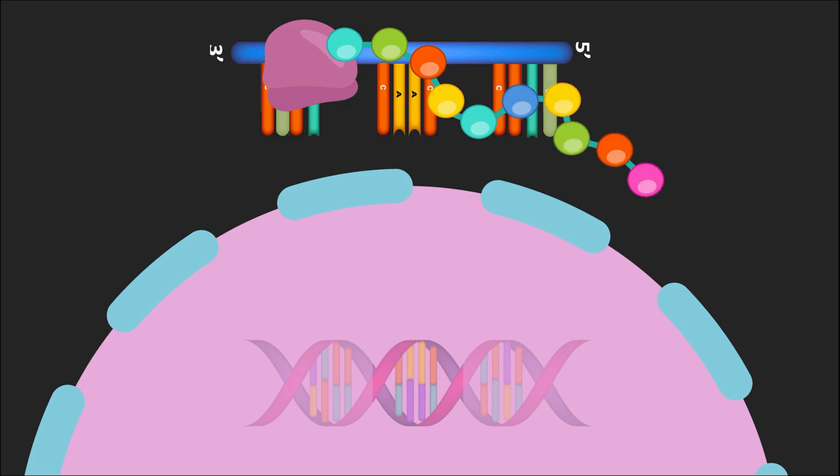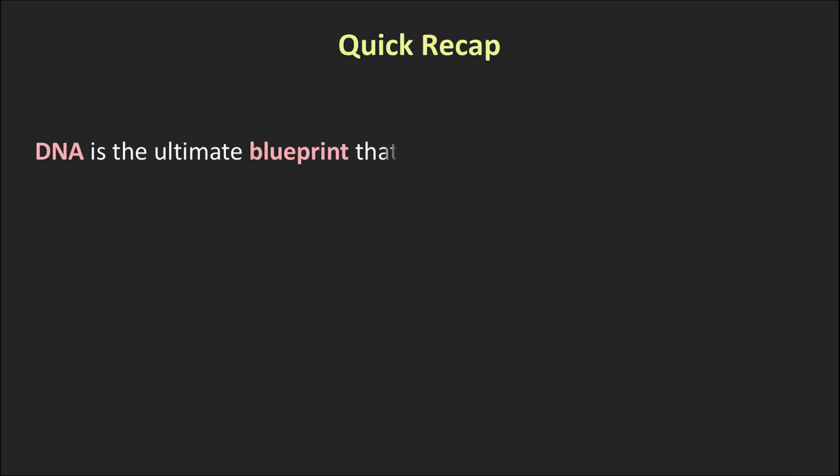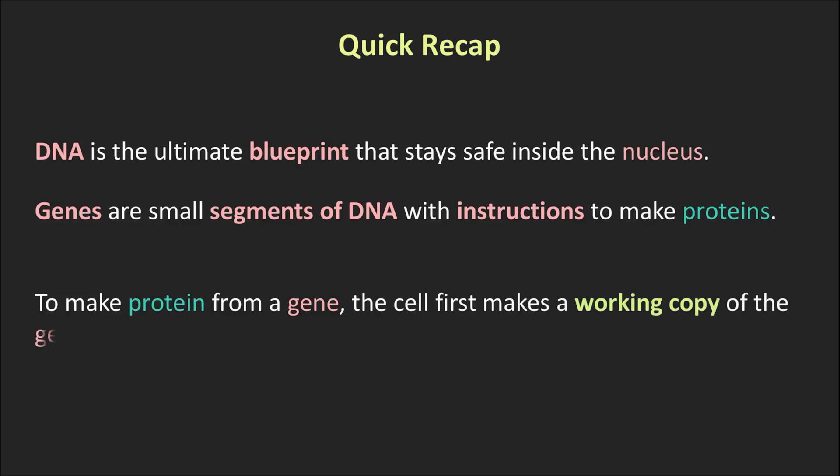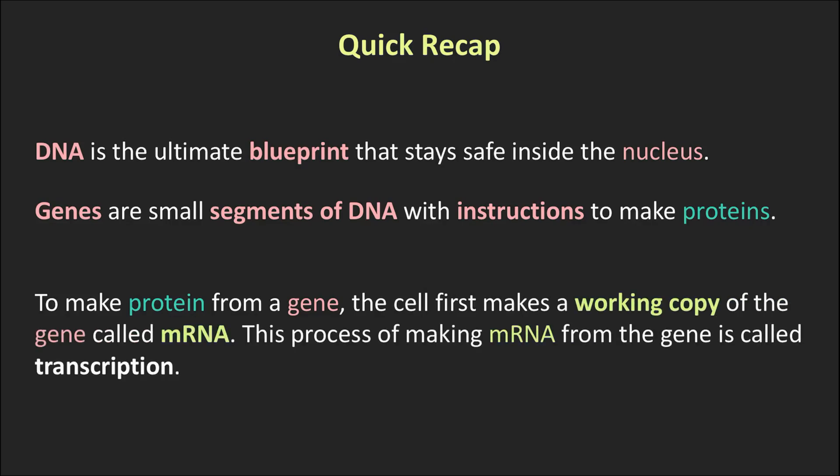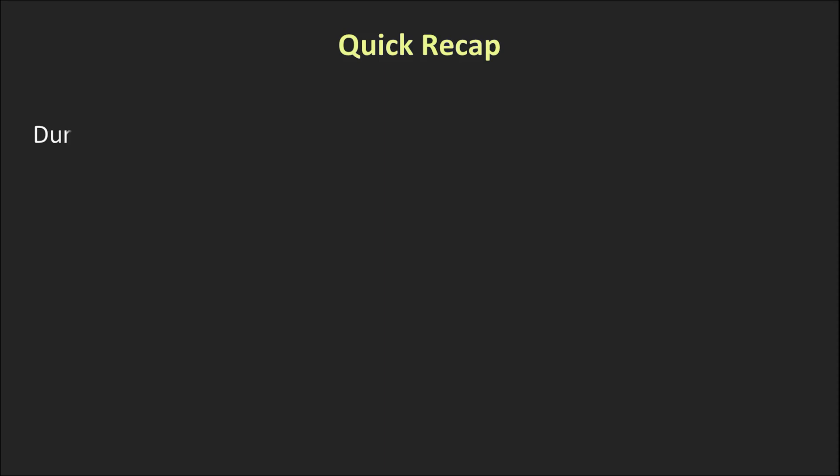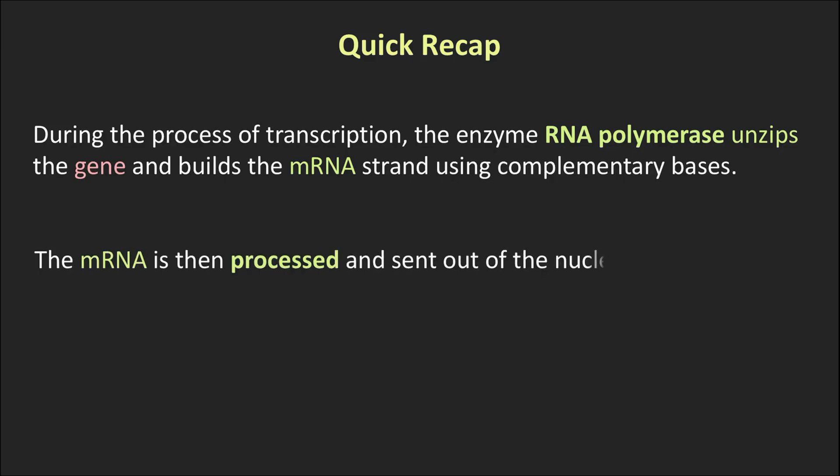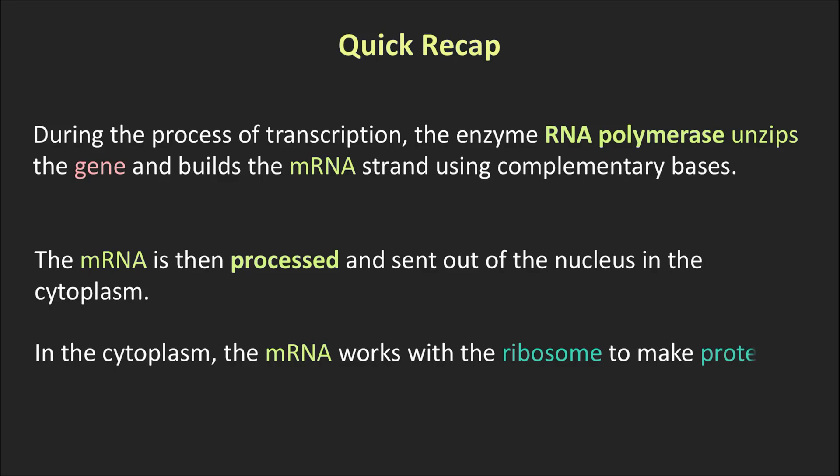But before moving on, here's a quick recap. DNA is the ultimate blueprint that stays safe inside the nucleus. Genes are small segments of DNA with instructions to make proteins. To make protein from a gene, the cell first makes a working copy of the gene called mRNA. This process of making mRNA from the gene is called transcription. And during the process of transcription, the enzyme RNA polymerase unzips the gene and builds the mRNA strand using complementary bases. The mRNA is then processed and sent out of the nucleus into the cytoplasm. And finally, in the cytoplasm, the mRNA works with the ribosome and makes proteins. So that's transcription in action. The DNA stays safe, mRNA carries the message and proteins are just around the corner.